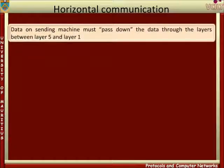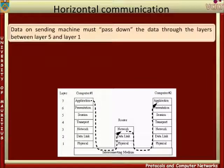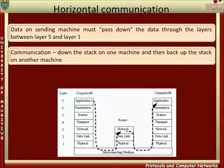Let's consider how the corresponding layers communicate using protocols. Since machines are only physically connected at layer 1, this means that in order for a protocol at layer 5 to function, the data on the sending machine must pass down through the layers between layer 5 and layer 1. The data is then transmitted over the physical connection to layer 1 of the other machine, and passed up the protocol stack of the receiving machine to layer 5. This is how the two machines are logically linked at layer 5, even though they have no physical connection at that layer. Thus, with the exception of the actual physical connection at layer 1, all horizontal communications also require vertical communication down the stack on one machine, and then back up the stack on the other.